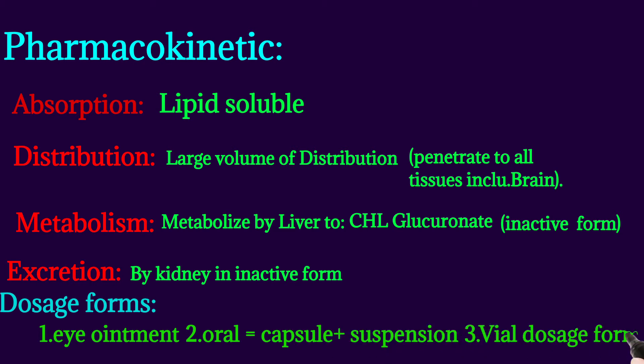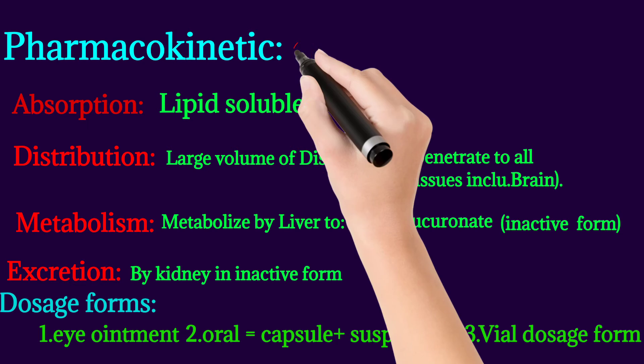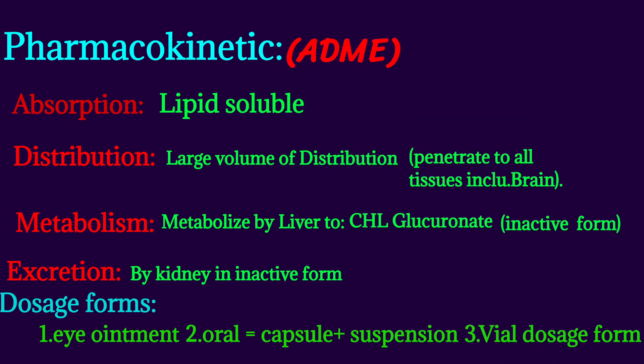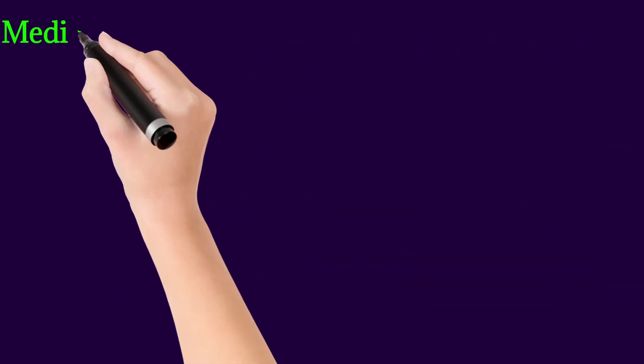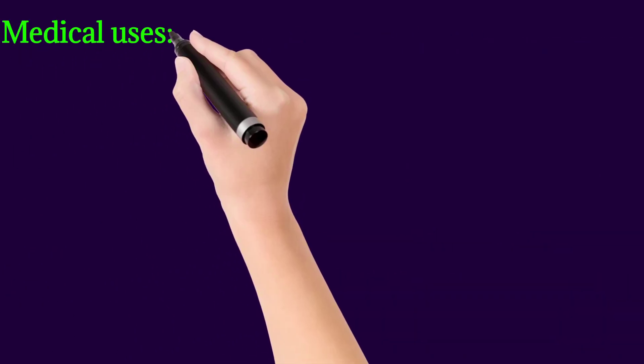There are various dosage forms: ointment, which is the semi-solid dosage form; capsule, which is the solid dosage form; suspension, which is the liquid dosage form; and oil, which is also a liquid dosage form. Here is the mnemonic to memorize pharmacokinetics: A for absorption, D for distribution, M for metabolism, and E for excretion.